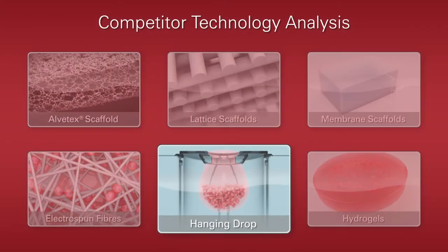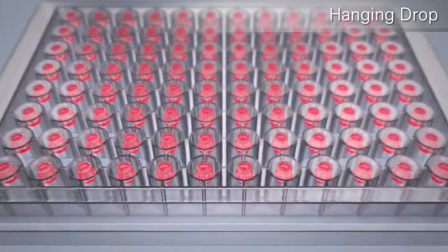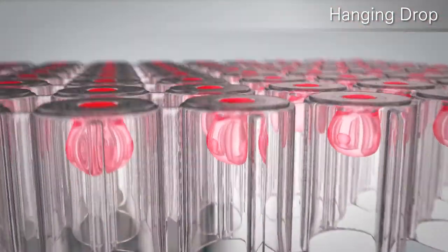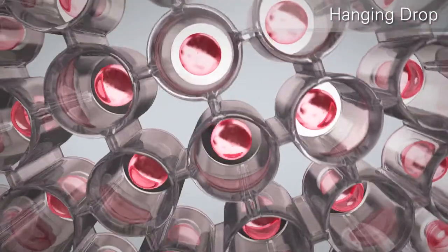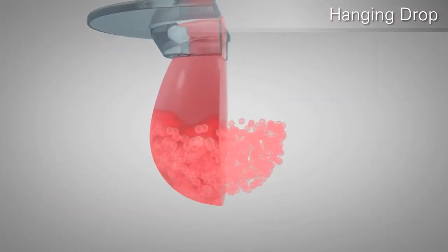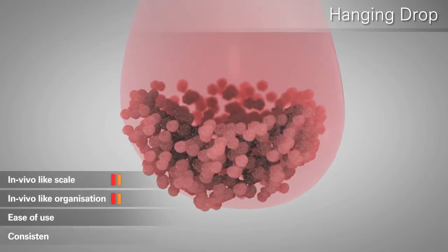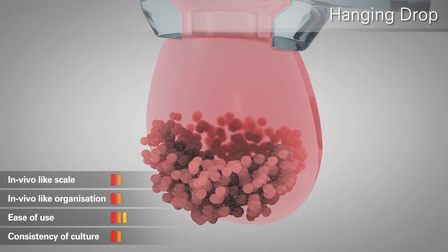Hanging drop technologies also suffer from a failure of organization and lack of complexity. In this method, a small number of cells form a spheroid in a droplet of media. Cells on the outside of the spheroid have access to the nutrients and can safely diffuse waste, but cells in the center have limited access to nutrients and waste products accumulate. This may result in the formation of necrotic centers and cell hypoxia, particularly in large diameter cell aggregates.